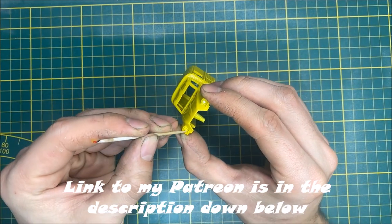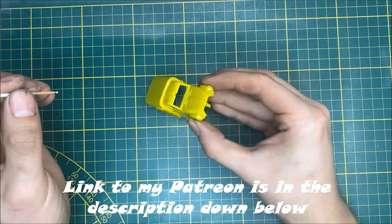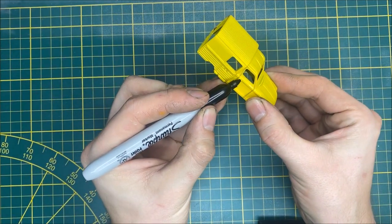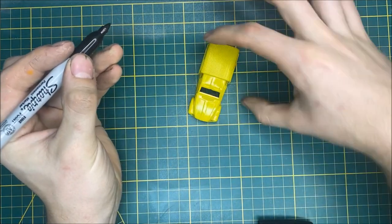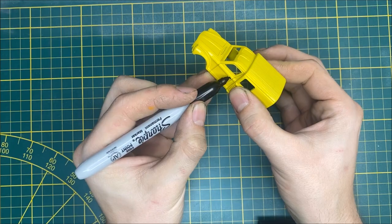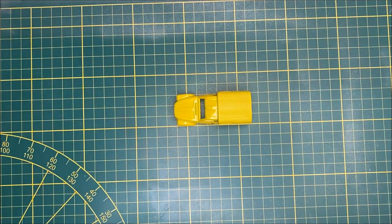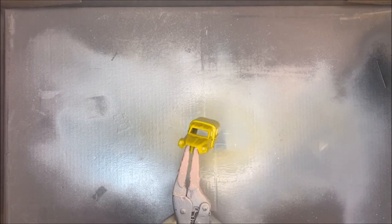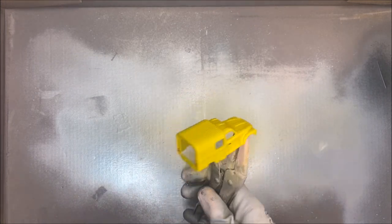Then I do the blinkers in orange and I forget to do the front blinkers because I'm not that smart. Next I take a new toothpick, take my white paint and just paint in the headlights. Then take my black marker and paint in the door handle because I don't think an old Citroën from this era deserves chrome door handles.